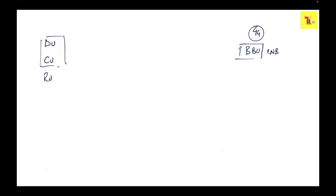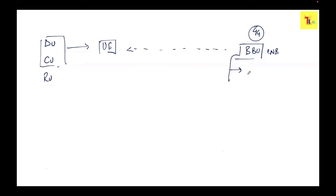The BBU or CU/DU has to communicate with your mobile, that is your UE. To do that, we need to follow some rules, and those rules are given by your protocol stacks. The protocol stacks include different layers: starting from PHY, then PDCP, then RLC, then MAC.